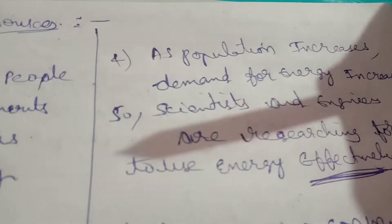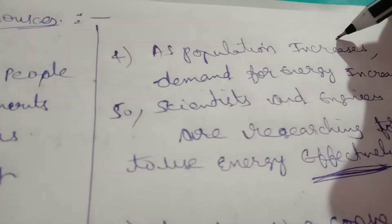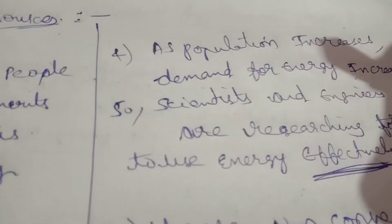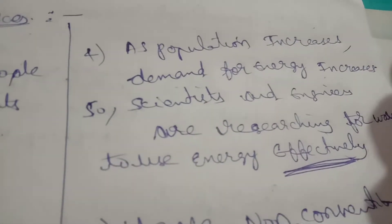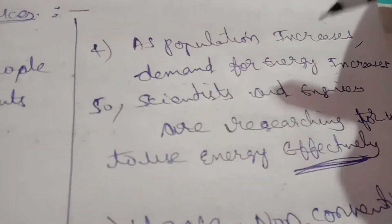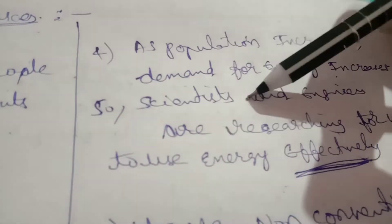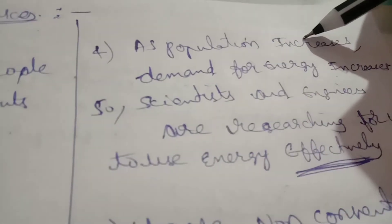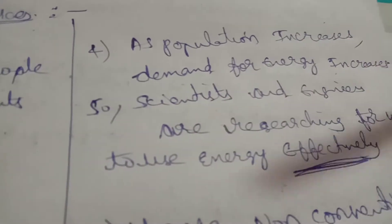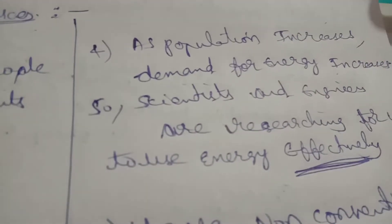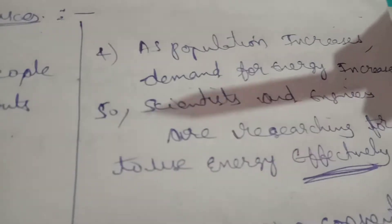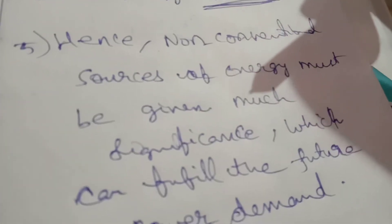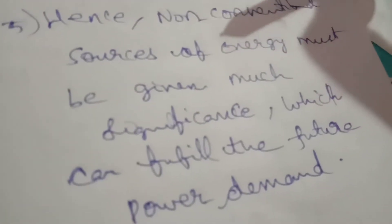Non-conventional sources of energy and solar energy can be directly used to produce electricity. Photovoltaic cells convert sunlight into electricity, and heat energy is also converted to electricity. Hence, non-conventional sources of energy must be given much significance, which can fulfill the future power demand.